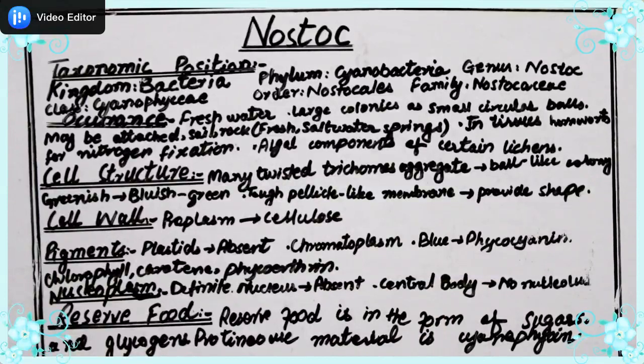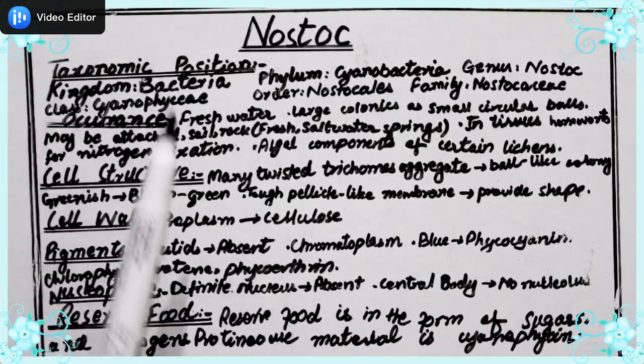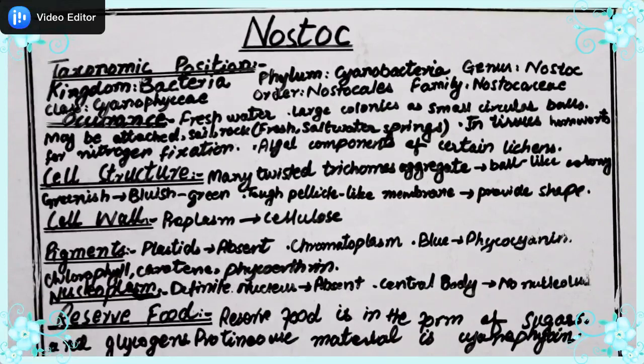The first point is the occurrence of Nostoc — where they are present. Mostly they are found in different freshwater environments. Large colonies are present in freshwater.